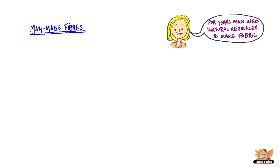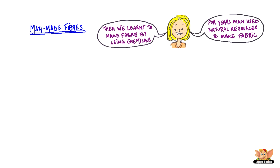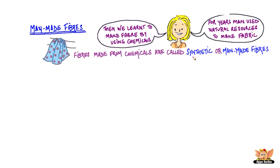For years and years, man used natural resources to make fabric. Then, over years, people learned to make fiber by using chemicals. These fibers made from chemicals are called synthetic or man-made fibers.